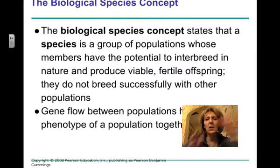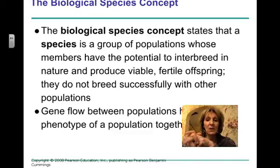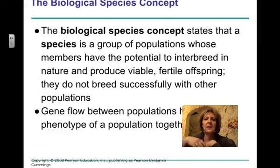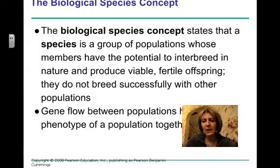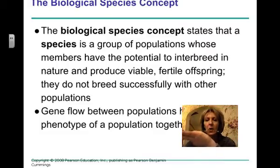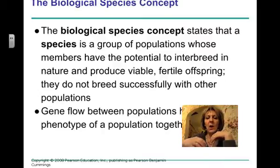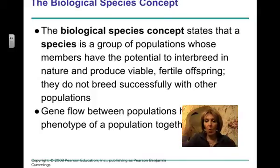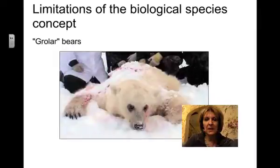I want to talk about the definition of a species and the biological species concept, the one that's most accepted. There are lots of different definitions, but the idea is that you have members in a population that can interbreed in nature and produce viable fertile offspring, and they don't breed successfully with other populations. You've got to have gene flow between these populations that holds the phenotype together.